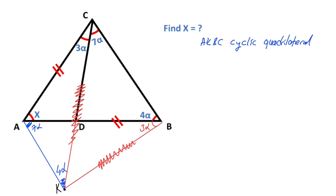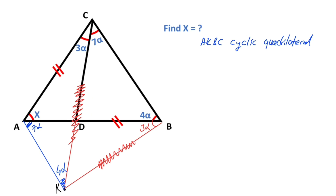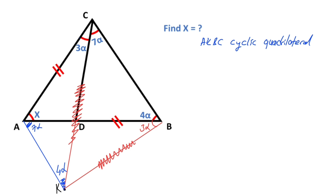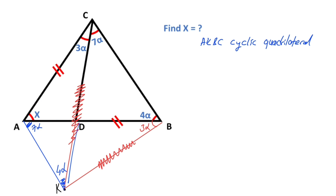And then, if you focus on triangle ACK: double line this side and 3 alpha. And then, if you focus on triangle DBK: double line this side and 3 alpha. That means these two triangles are congruent, because they have two same sides and the angle between these two equal sides. So, according to side-angle-side, triangle ACK and triangle DBK must be congruent.